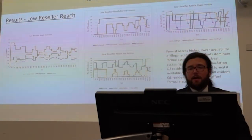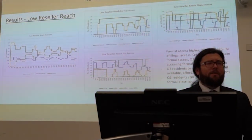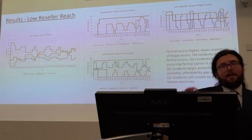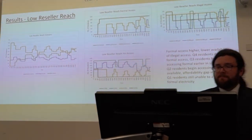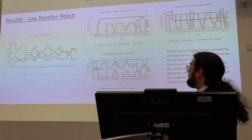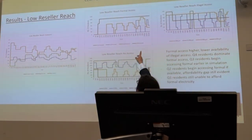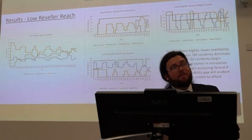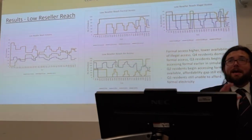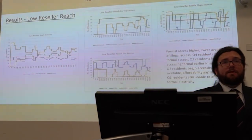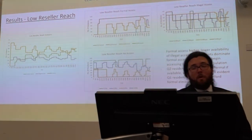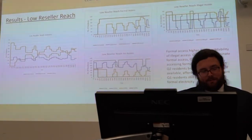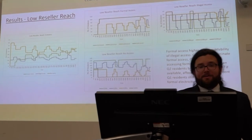For the low reseller reach scenario, formal electricity access is higher — quite obviously due to the lower availability of illegal access. Quintile 4 residents continue to dominate formal access, but Quintile 3 residents begin accessing formal electricity earlier in the simulation and in greater numbers. Quintile 2 residents have some formal access — you can see the blue line at the bottom of the top graph — which suggests there is still an affordability gap, but some degree of affordability for Quintile 2 residents. Critically, Quintile 1 residents are still unable to afford formal electricity even if it's the only option, suggesting a persistent affordability gap.